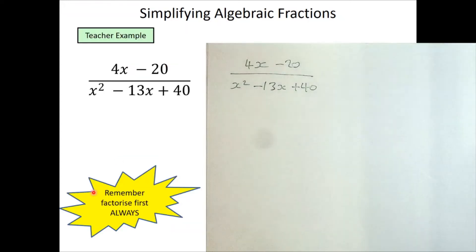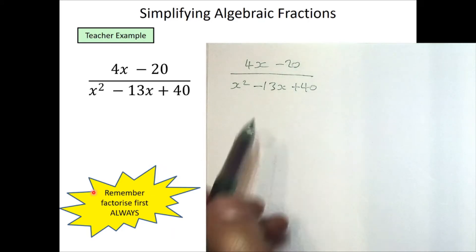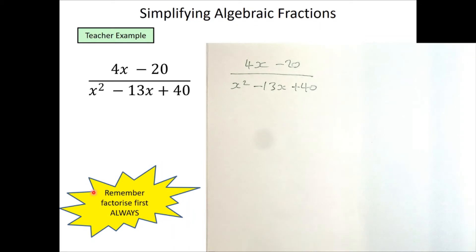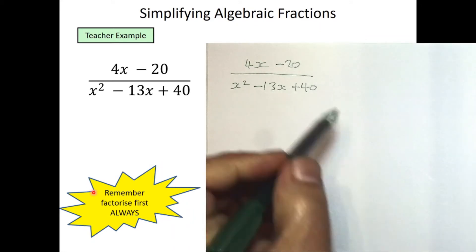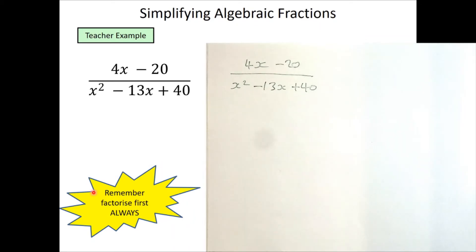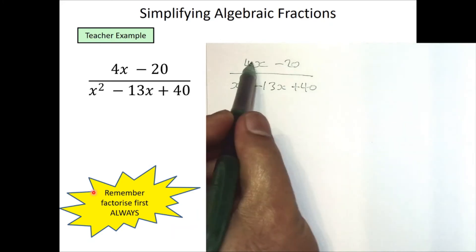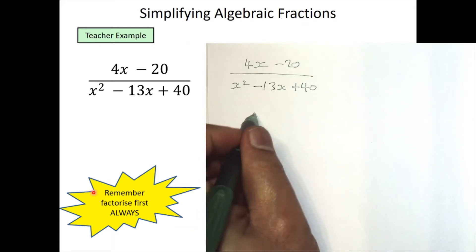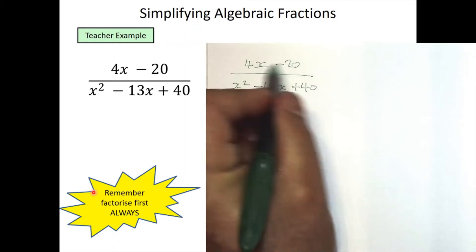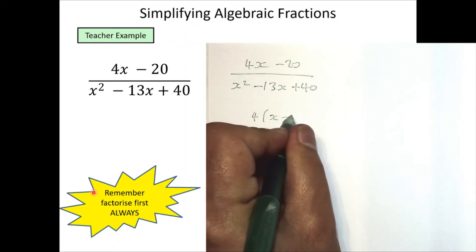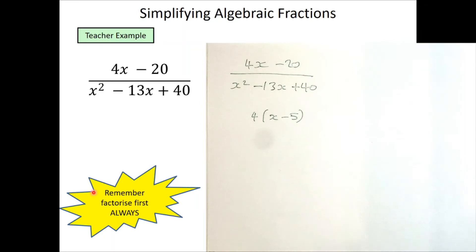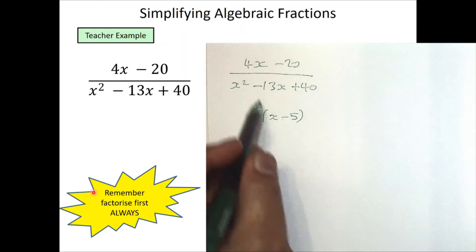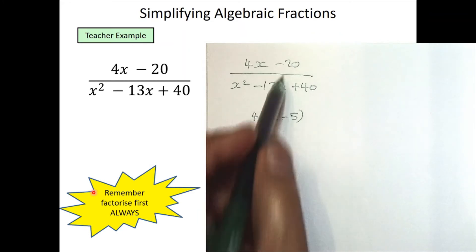In this example we've got (4x − 20) / (x² − 13x + 40), and this time we need to factorize both terms. For the numerator, the highest common factor is 4, so we take 4 outside the bracket, leaving (x − 5) inside. We can check by expanding: 4 × (−5) = −20. ✓